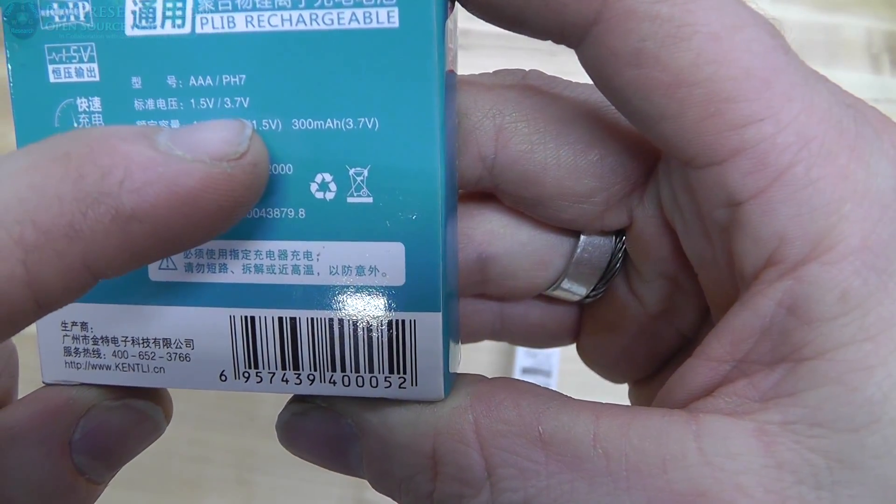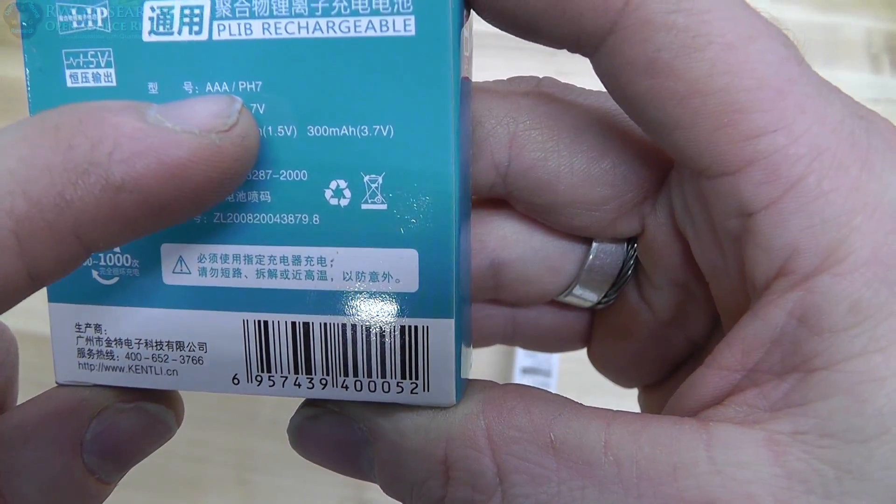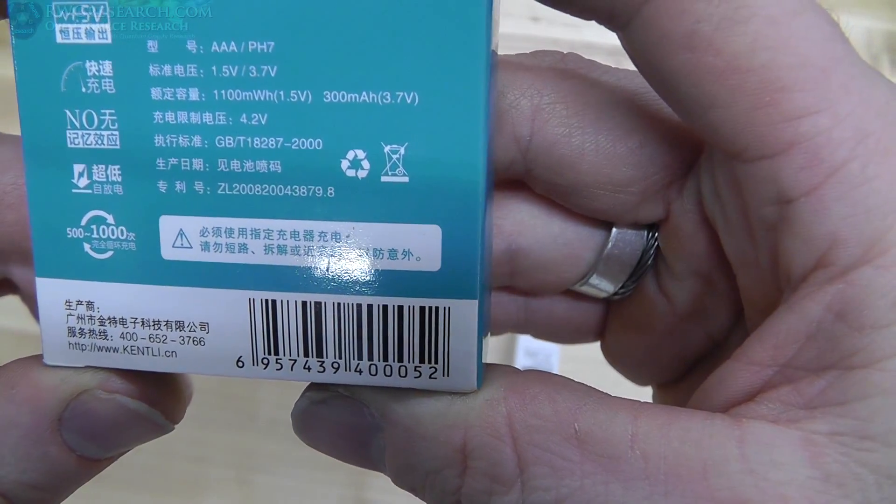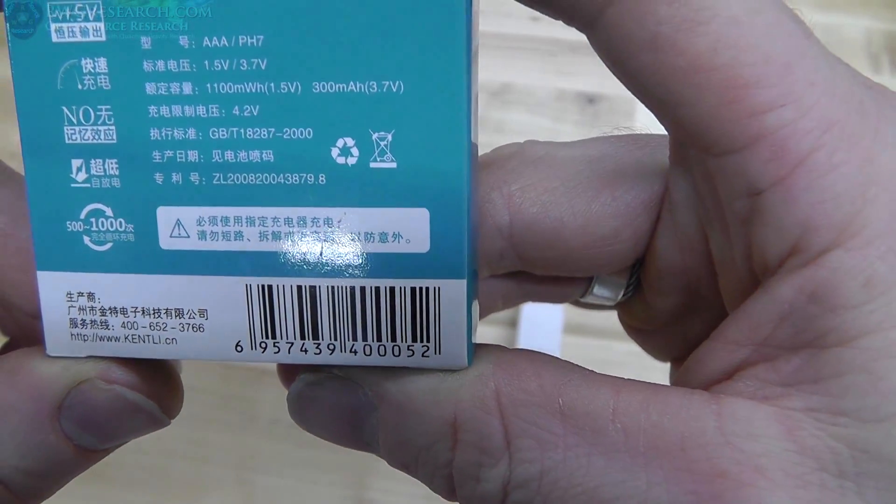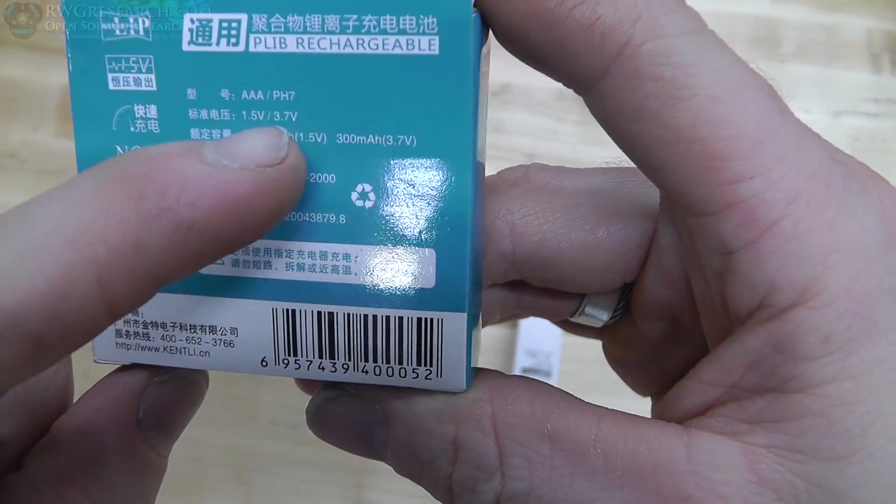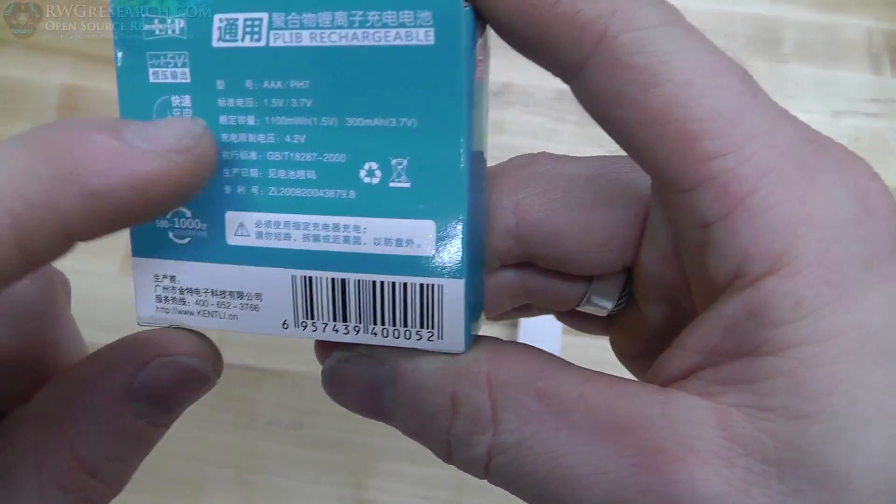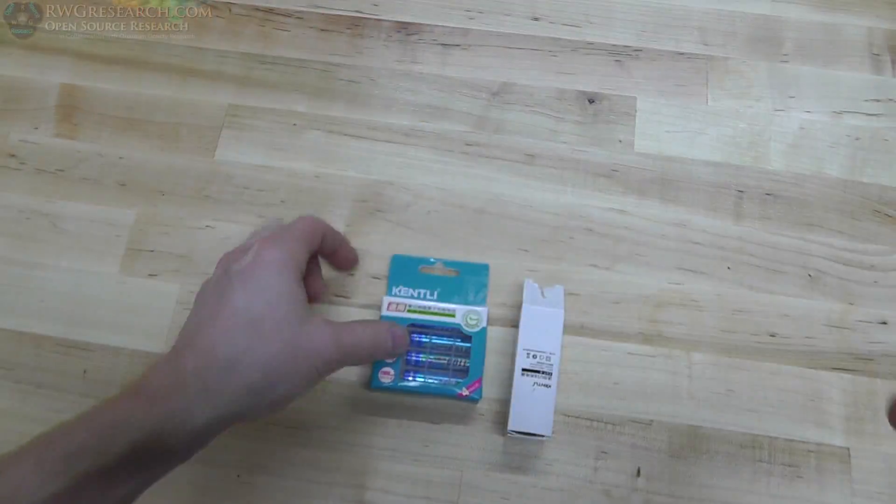Here it's got 1.5-slash-3.7-volt, AAA, or PH-7. I presume that's the other type of size this is. I'm not sure. But I found that very interesting. I was like, what? 3.7, but they're 1.5. So now I was a little confused.